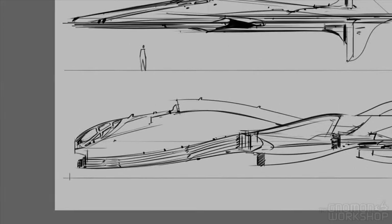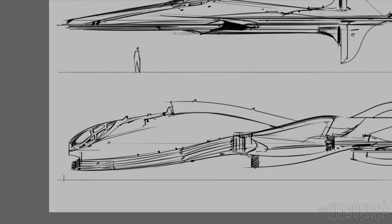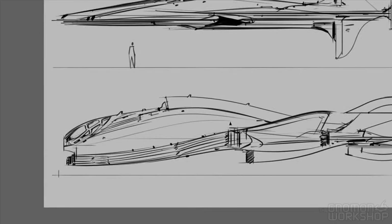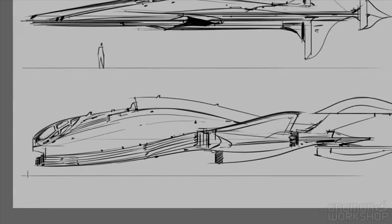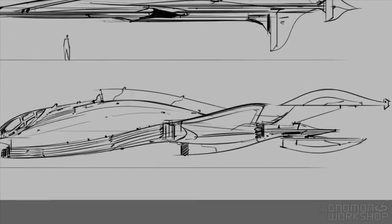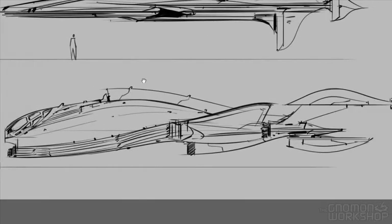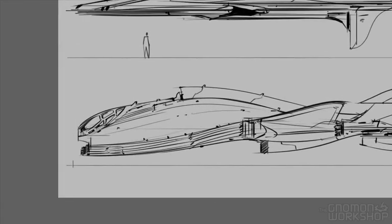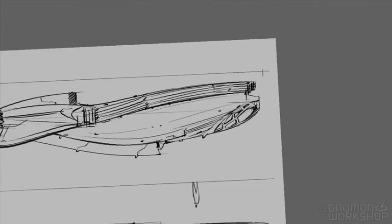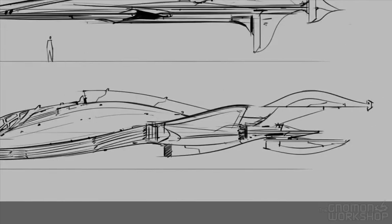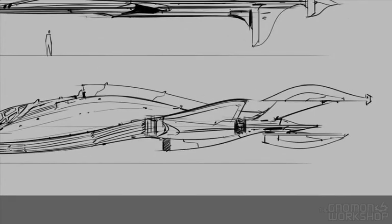Adding details — cockpit and little micro details — these are things that give a sense of scale. Even though we're focusing on silhouette, these drawings could actually become the final design if the project is under a tight timeline. This is enough information for a very talented 3D modeler to go to the next stage. All you need is a rough front and a rough top view. My philosophy is always: from the roughest drawing to the cleanest drawing, at any stage you can stop production and the work you've done up to that point is useful.